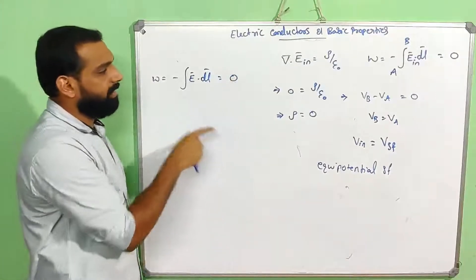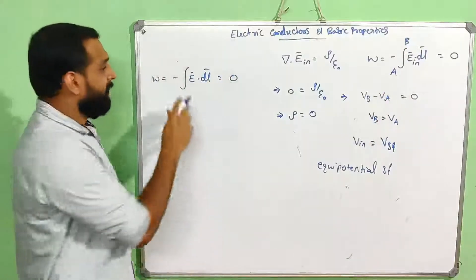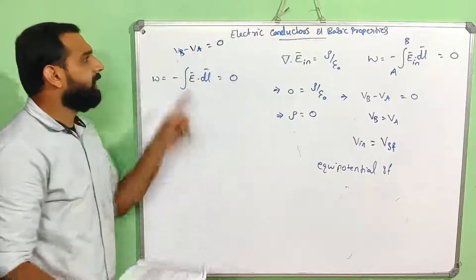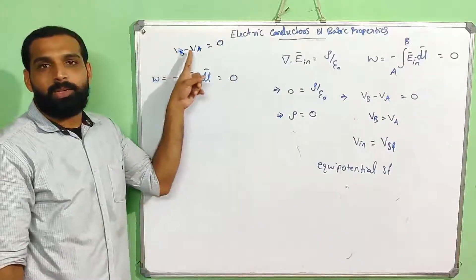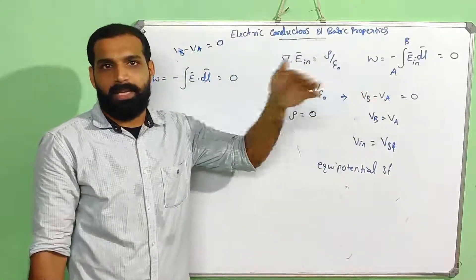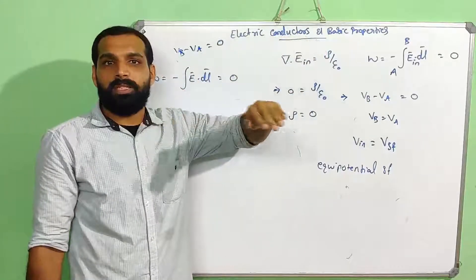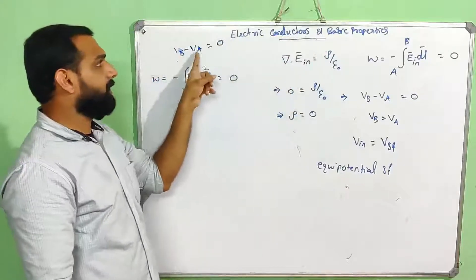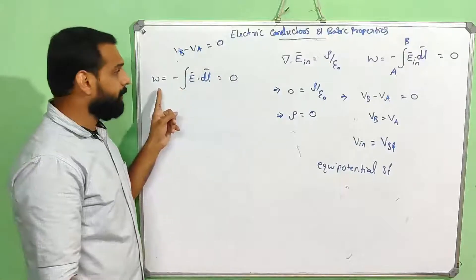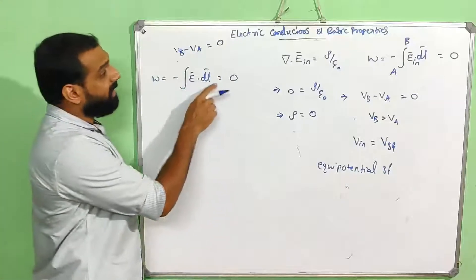The potential difference is zero — V_B minus V_A equals zero — because the potential at point B equals the potential at point A. Considering two points A and B on the surface of the conductor: since it's an equipotential surface, V_B minus V_A equals zero. Therefore, work done over the equipotential surface is zero: minus integral of E dot dL equals zero.